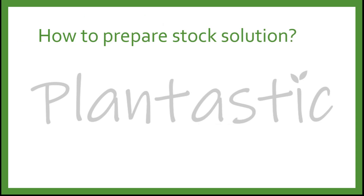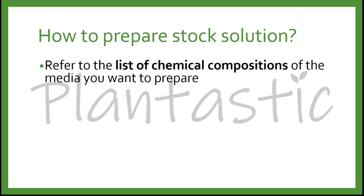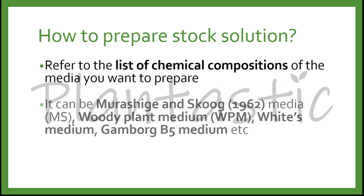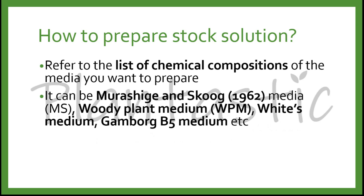How do we prepare a stock solution? First, you have to refer to the list of the chemical compositions and get the chemicals prepared. It can be Murashige and Skoog 1962 media, which is known as MS, or Woody Plant Medium (WPM), White's medium, Gamborg B5 medium, etc.